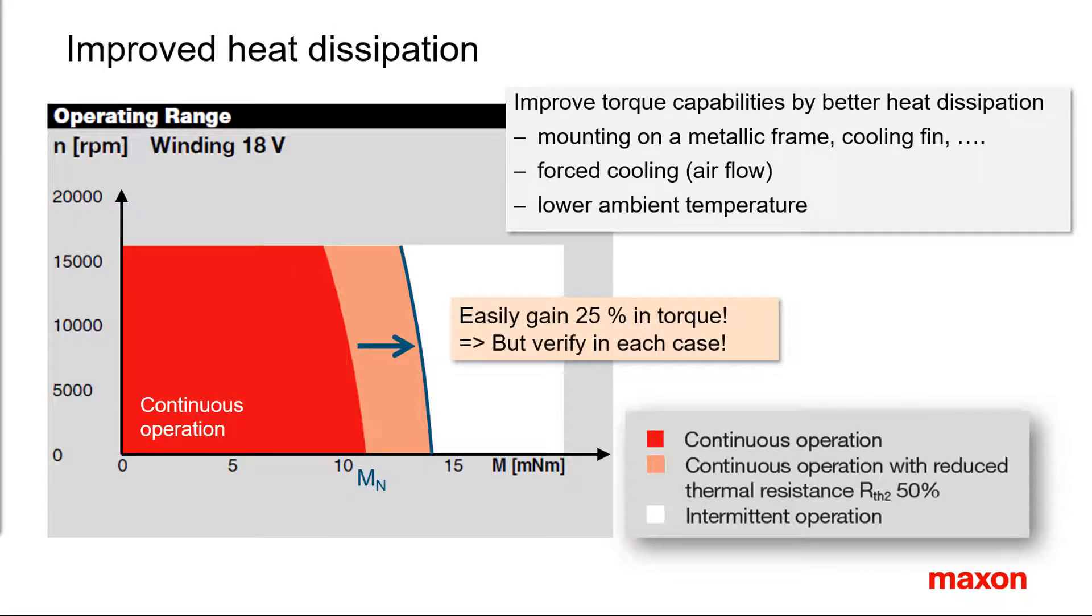It's quite easy to enhance the continuous torque by about 25%. However, be aware that reduced heat dissipation can have the opposite effect. For example, the motor is derated at higher ambient temperatures.